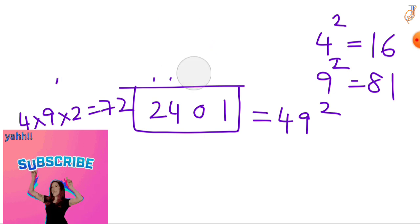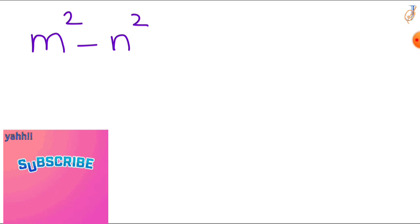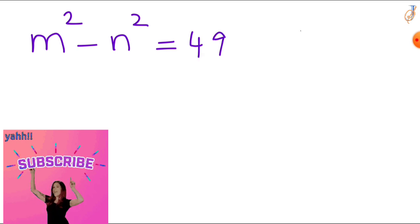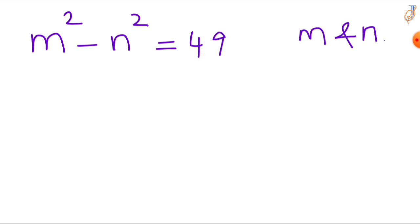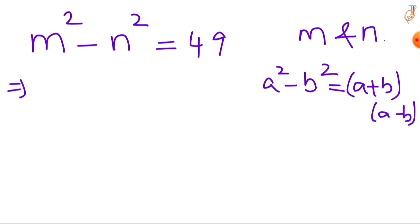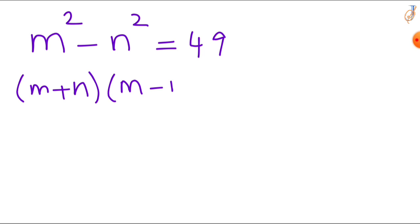Now using these square numbers I'm going to solve an Olympiad question: m squared minus n squared equals 49. Find the values of m and n. The left-hand side m² - n² is in the form of a² - b², and the formula is (a + b)(a - b). So we write it as (m + n)(m - n) = 49.